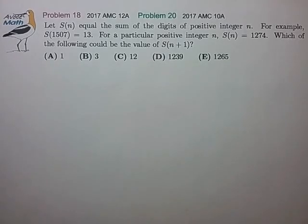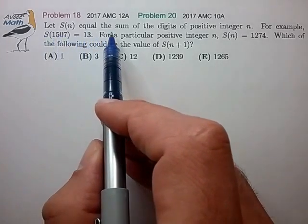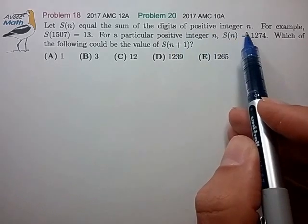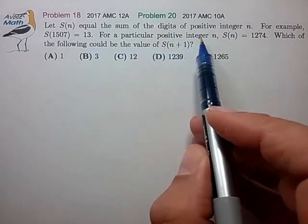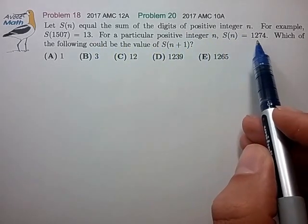Hi, here's another example of a recent AMC problem that is well suited to modular arithmetic methods. So let's see what we have. Let S(n) equal the sum of the digits of a positive integer n, and for a particular positive integer n, let S(n) equal 1274.